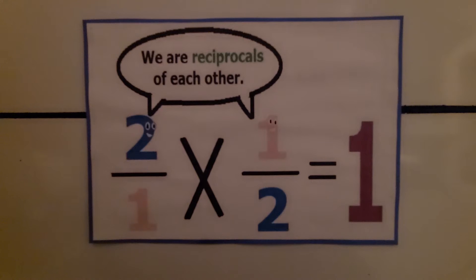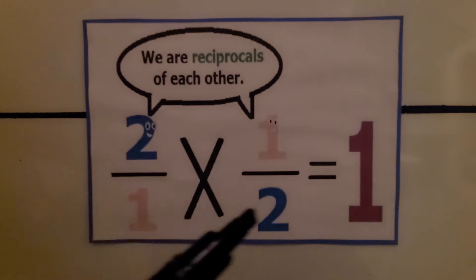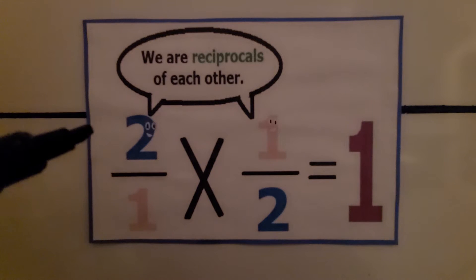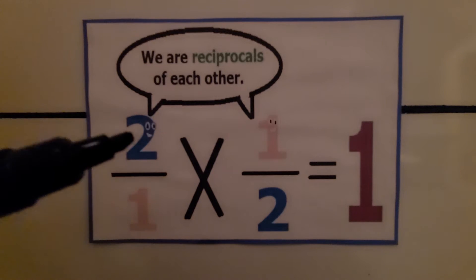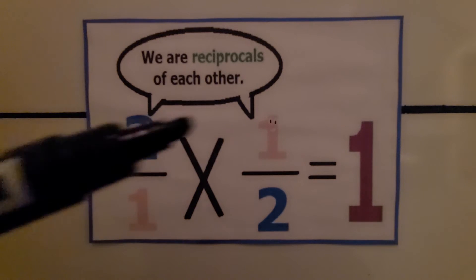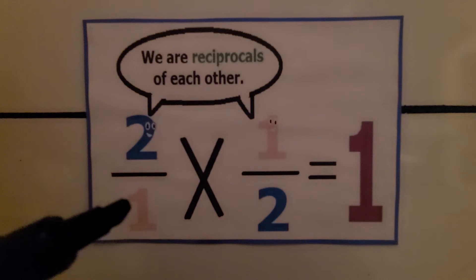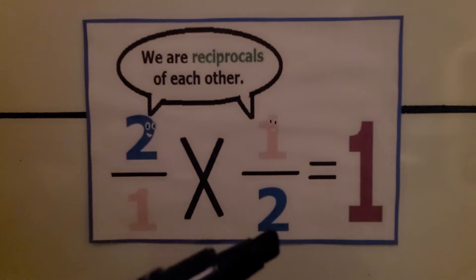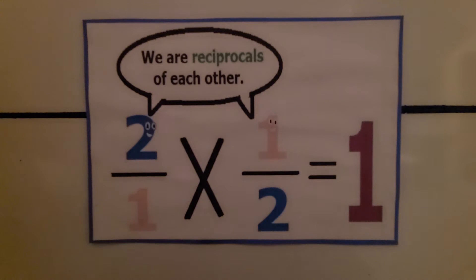A reciprocal is like a flipped upside-down version of a fraction. If we multiply the numerator by the numerator of its reciprocal, we get 2, and if we multiply the denominator by the denominator of its reciprocal, we get 2 — giving us 2 over 2, which equals 1. So when we multiply a fraction by its reciprocal, it equals 1.